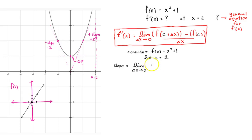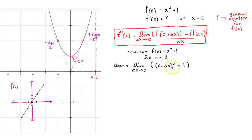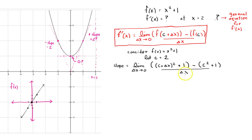If I plug c plus delta x into my equation, instead of x I've got c plus delta x. So the numerator becomes: c plus delta x, squared, plus 1 — that's the f of c plus delta x part — and then I'm subtracting f of c, which is c squared plus 1, all divided by delta x.